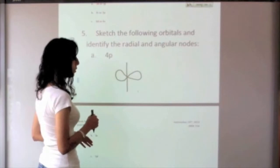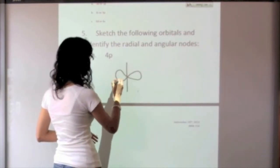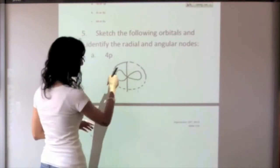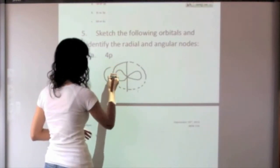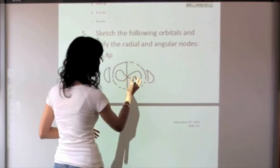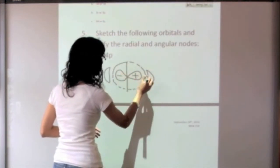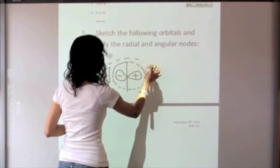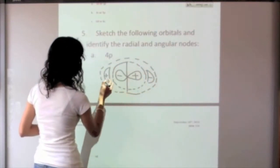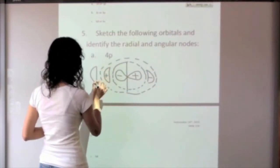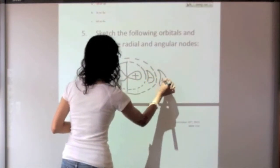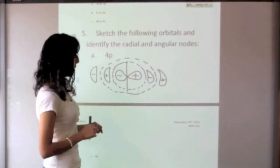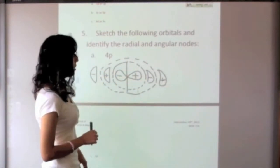This is just a 2p orbital. Well, we want to draw the 4p, so that's one radial node. Let's not forget - so that's a 3p, and this is a plus and this is a minus, and that's the 4p.